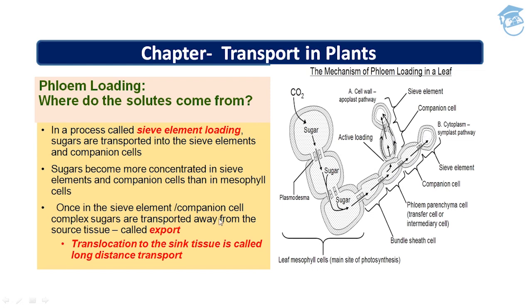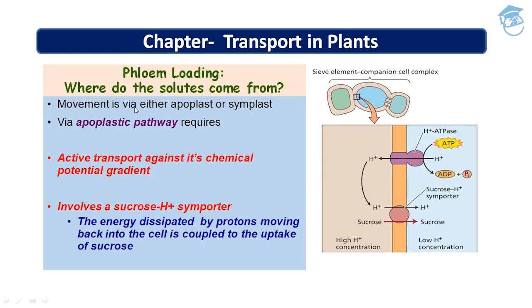Translocation to the sink tissue is called long-distance transport, as it is not confined to just three cells. Movement of phloem sap is via either the apoplast or the symplast. Via the apoplastic pathway, it requires active transport against the chemical potential gradient and involves a sucrose and H+ symporter. I have already taught you about symporters and uniporters in the second section of the chapter 'Transport in Plants.' The symporter allows H+ ions and sucrose to move together.